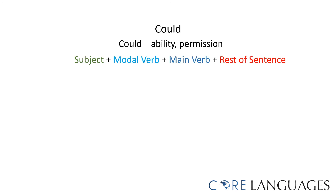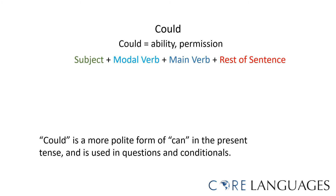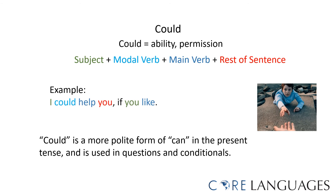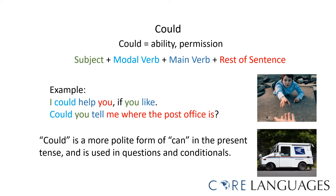The modal verb 'could' is used to express ability or permission. 'Could' is a more polite form of 'can' in the present tense, and is used in questions and conditionals. For example, I could help you if you like — this could also be 'I can help you if you like', but we use 'could' to make it more polite. Could you tell me where the post office is? This could also be 'Can you tell me where the post office is?' but using 'could' makes the sentence more polite.